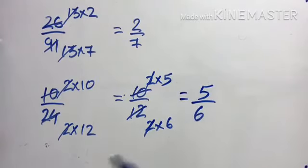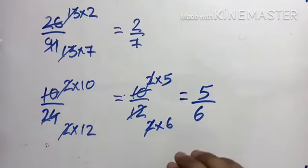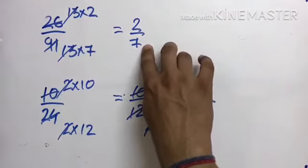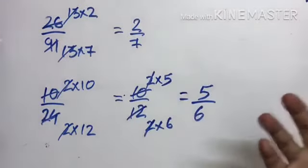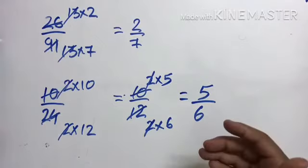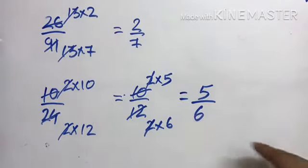If we cut this again, our answer is 5 by 6. If it can be cut again then cut it again. If not, then see this condition - it's not possible because 7 doesn't come in 2's table. We have to keep cutting until it's no longer possible, understood?